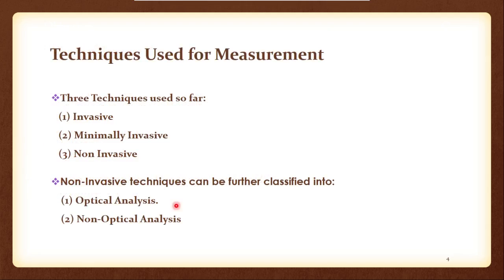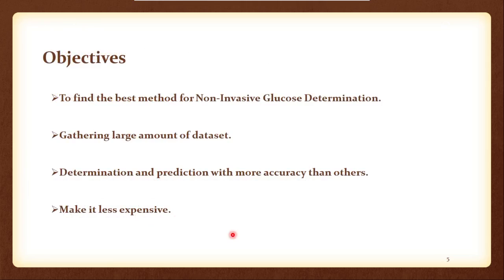And these are the techniques that are generally used for measurements: among these three - invasive, minimally invasive, and non-invasive - we are dealing with this non-invasive scenario. There are two ways by which non-invasive techniques can be evolved: one is optical analysis and another is non-optical analysis. So what are our objectives? First of all we want to find the best method for non-invasive glucose determination, and then also we want to get a large amount of data that we are needing for training and validating our models. Also we want to determine and predict with more accuracy than other methods, and also we want to make it less expensive as possible.